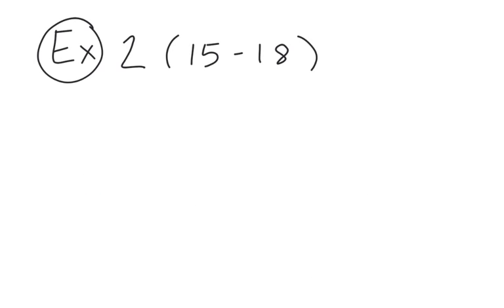In our first example we want to evaluate 2(15 - 18). Let's first identify the different operations that are present. We have a subtraction sign, and something hidden: when you have a number in front of a pair of brackets, the operation is actually multiplication.